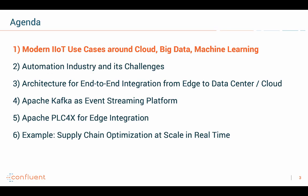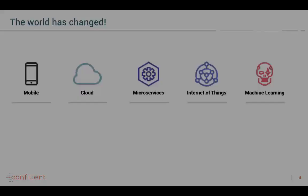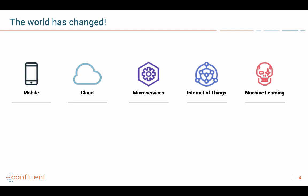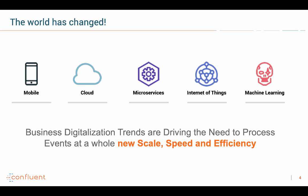Let's first start with some use cases and talk about the motivation for all these discussions we have with our customers. The world has changed — we develop software completely different from a few years ago. We talk about things like cloud, Internet of Things, and machine learning for real-time analytics. In the end, there are three new requirements: you need a new scale because you have many devices and machines to integrate, and they produce a lot of data.